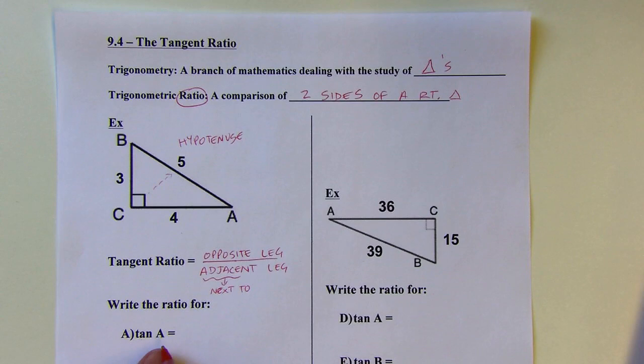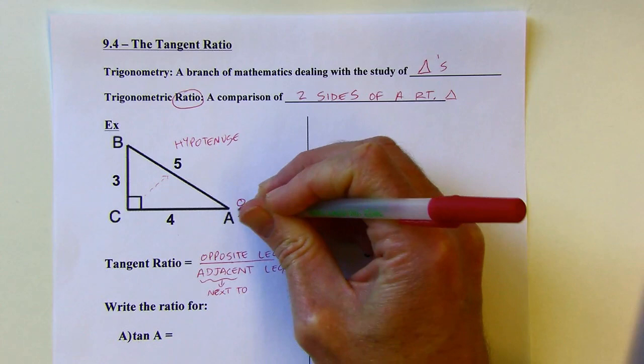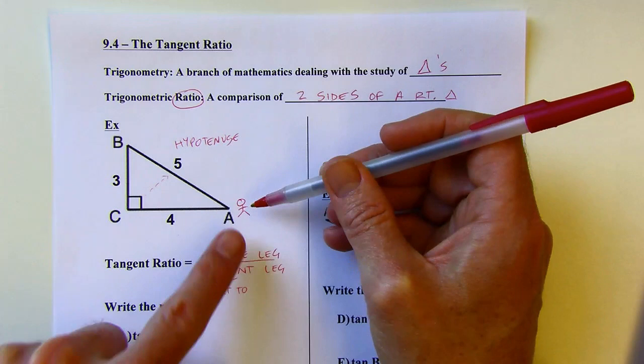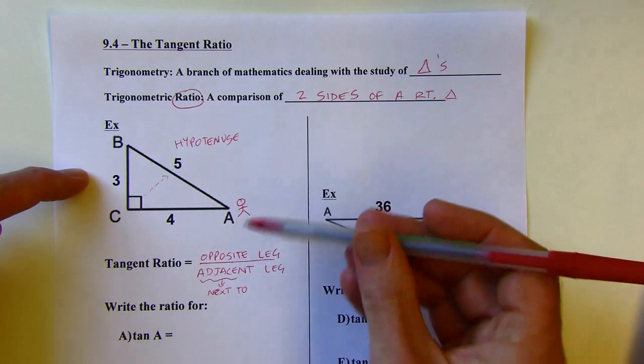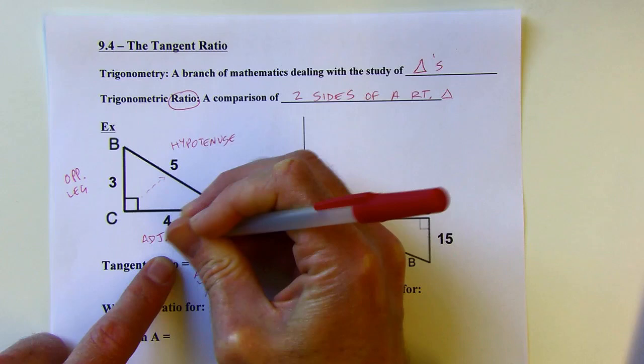When I'm looking for the tangent of angle A, I'm going to be thinking of the triangle from the perspective of this corner, angle A. I'll draw a little stick figure — I'm pretending I'm over here at A looking at this triangle. I've got a leg over here and a leg over here. One of them's going to be opposite and one's adjacent. The opposite leg is the one across from you, and this is the adjacent leg — the one closer to me.